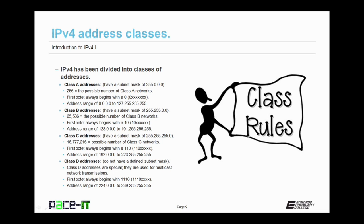So the first three bits of the left-hand octet are always one one zero. This gives us a possible class C address range of 192.0.0.0 up to 223.255.255.255.